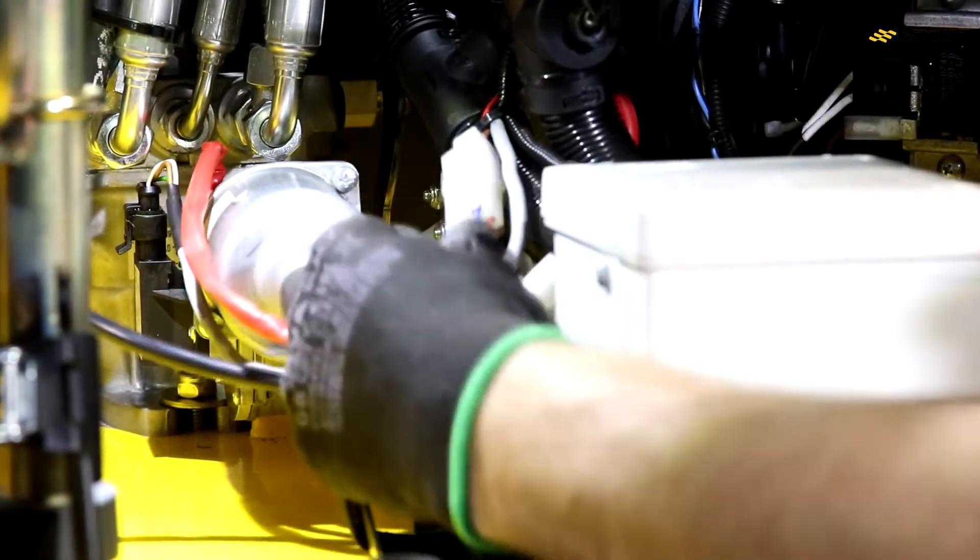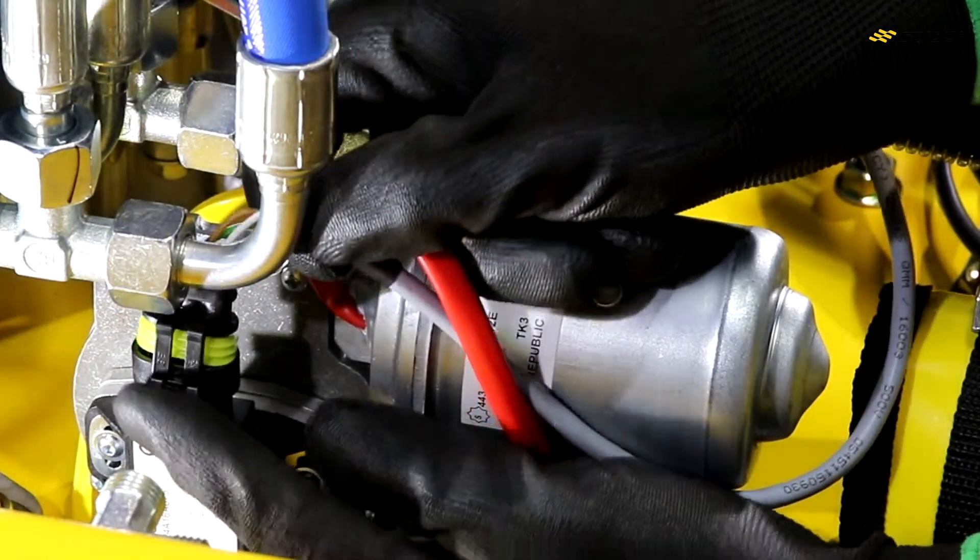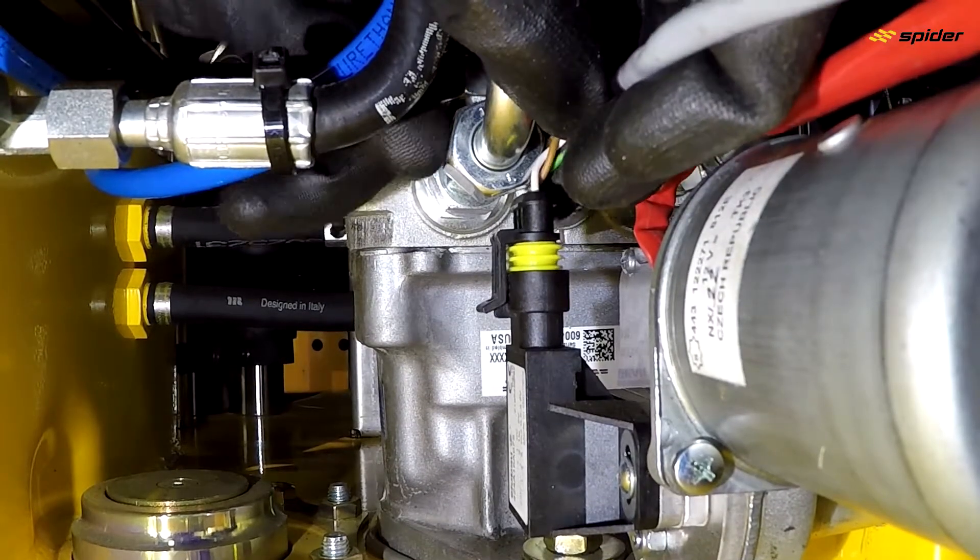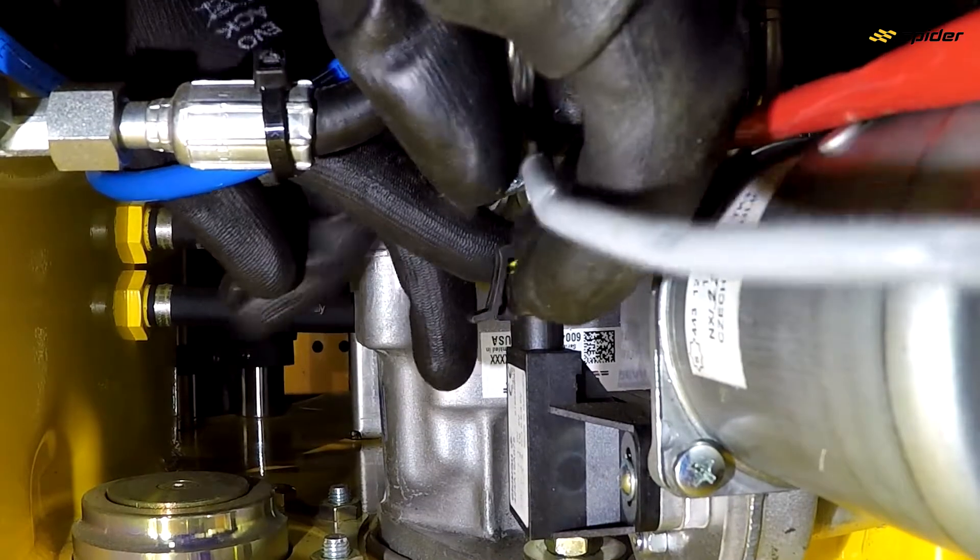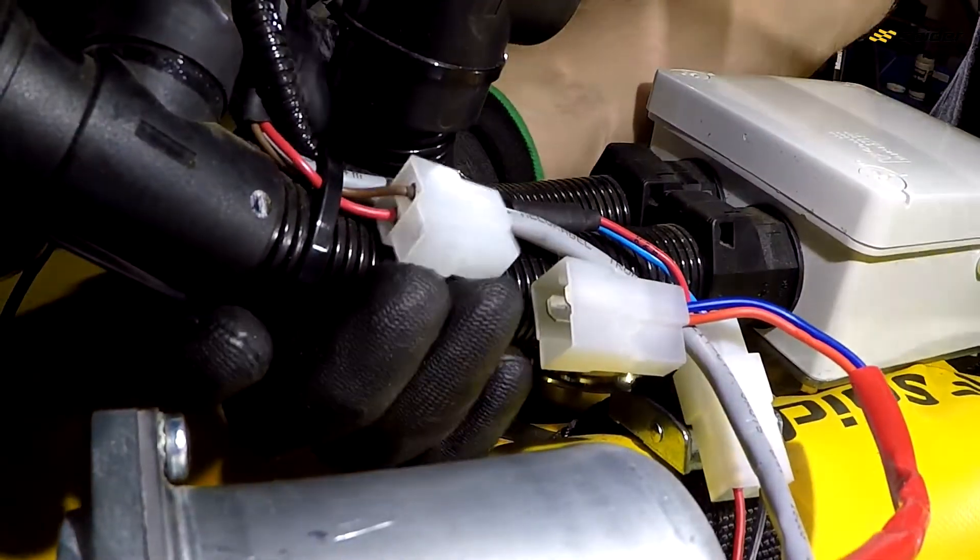During disconnecting the servo motor, disconnect the connection wires first and then the neutral position sensor. When connecting, do it exactly in an opposite way, the sensor first and then the power wires.